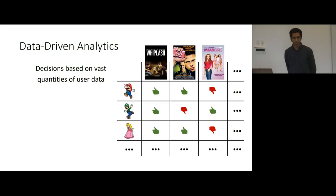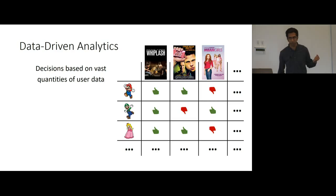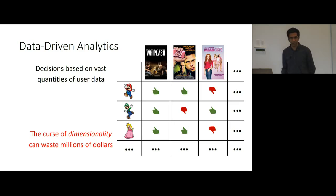You might have heard that a lot of companies have been turning towards data-driven analytics in order to make product decisions. For instance, Netflix is very well known for this practice. In particular, the hit show House of Cards was developed based on their user analytics, deciding that their users would really love this type of show. But there are challenges: they deal with very high-dimensional data, with thousands of movies and millions of users. You really have to take this high-dimensionality into account when making inference decisions, otherwise you'll waste millions of dollars on a TV show that bombs.